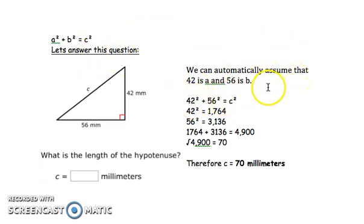Now we are going to find the values of 42 squared and 56 squared. 42 squared is equal to 1,764, and 56 squared is equal to 3,136. Now this equation requires us to add these two numbers together. So we are going to add 1,764 plus 3,136, and that is equal to 4,900.